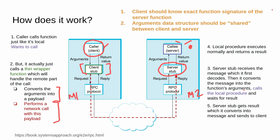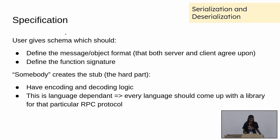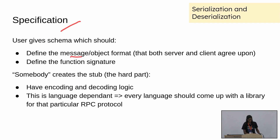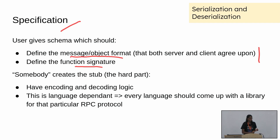So the client should know the exact function signature — if there's a getUser which needs a user ID, the client must know that. And the argument data structure must be shared between server and client. Both of this is handled by what is known as a specification. In RPC it's called a specification. Specification has a schema with the message format — the data structure — and the function signature. Both server and client should know this schema so that they follow the same function signature and function arguments.